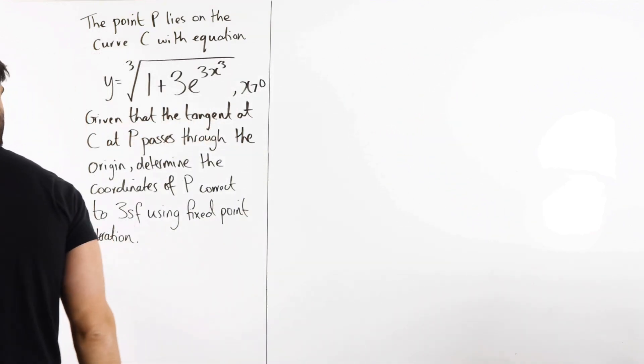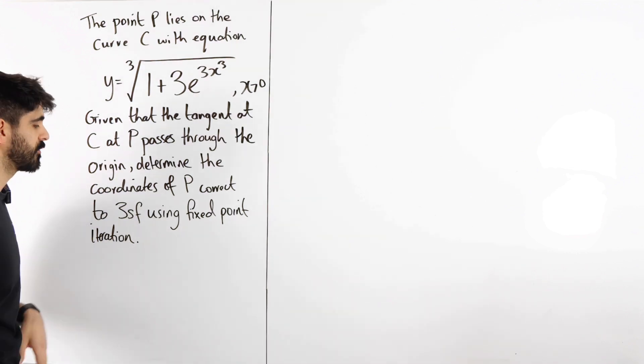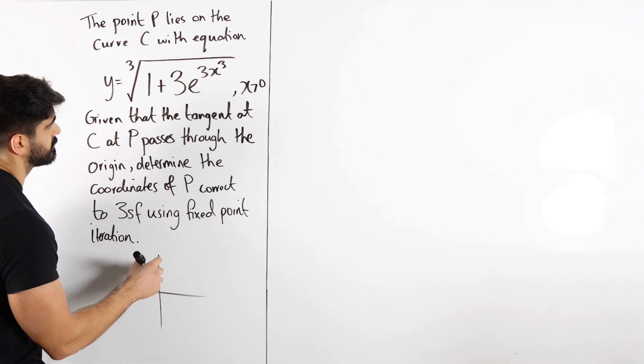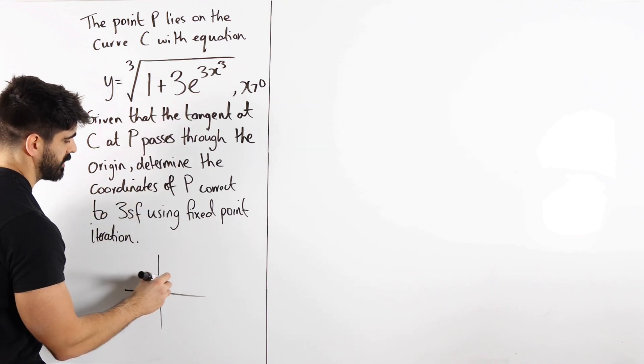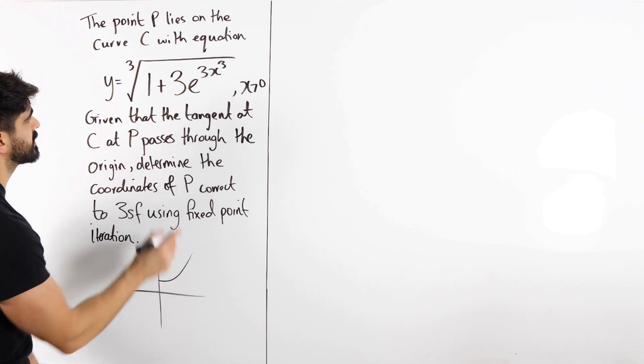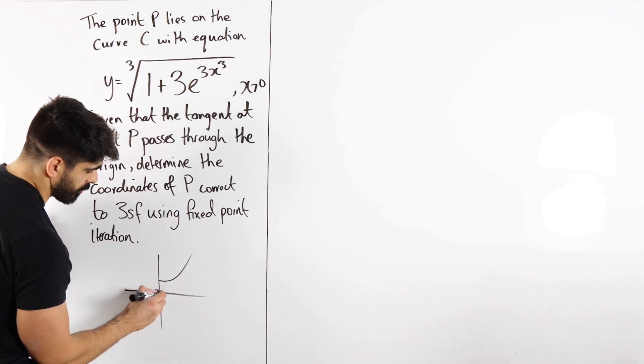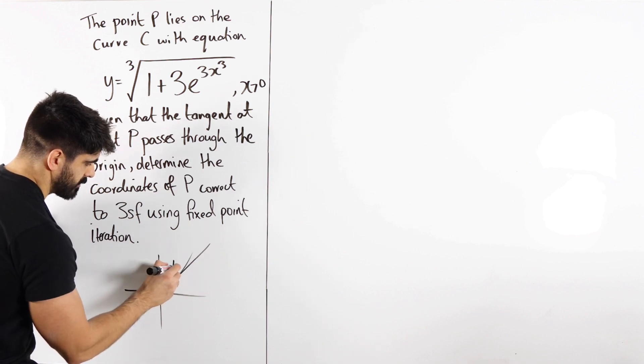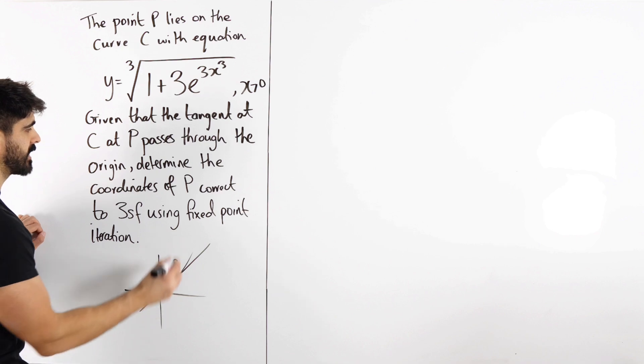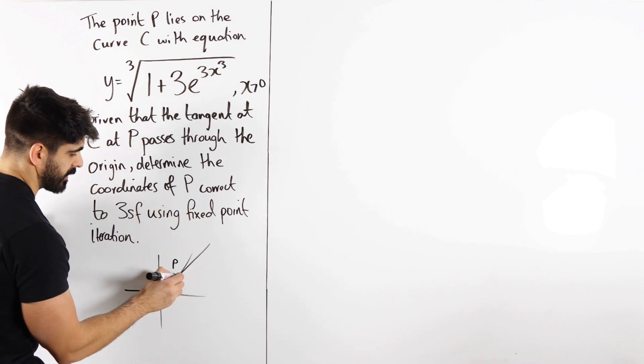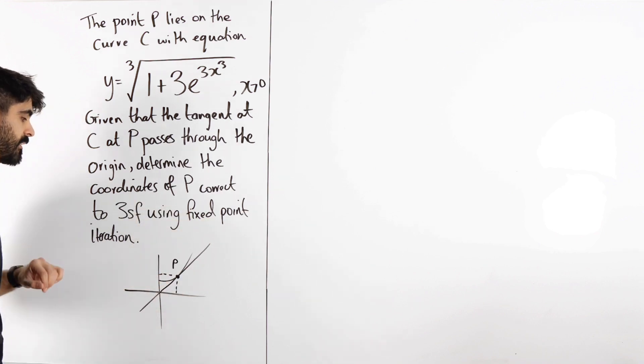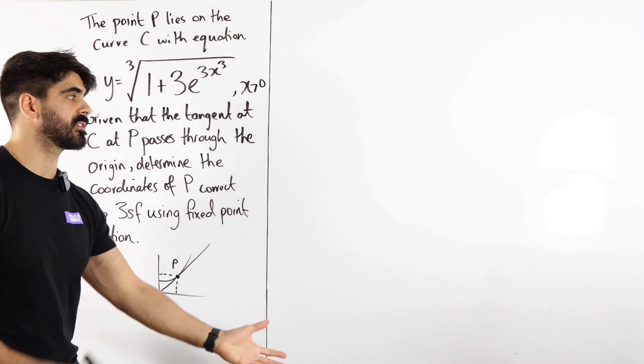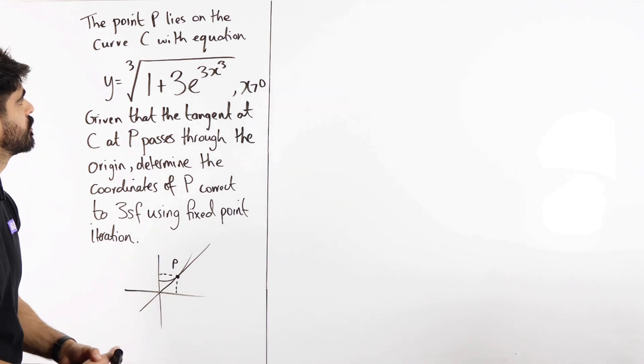Now I have no idea what this graph looks like. In the exam perhaps they would show you, but it's an exponential, well looks like an exponential. Let's just pretend it looks something like this. Now they're saying the tangent goes through the origin, so the tangent at some point is going through the origin. They're saying find the coordinates of P, so find the x and the y value.